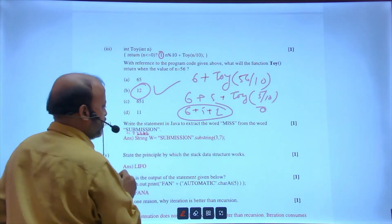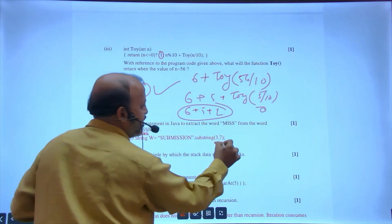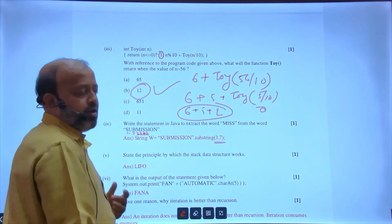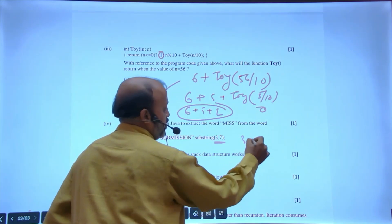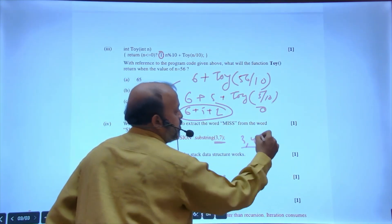Now see miss: 0, 1, 2, 3, 4, 5, 6. I need 3, 4, 5, 6. So substring(3, 7) because the last one is not taken. When you give 3, then you get 3, 4, 5, 6.